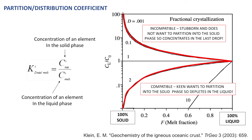In contrast, compatible elements are elements that have a partition coefficient above 1 — so 2 and even higher at 10. These are elements that are super keen for the solids, so the second a solid appears in a cooling magma they want to partition into it, which then slowly depletes them in the liquid.